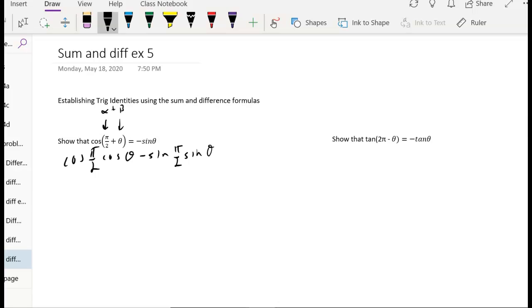So the cosine of pi over 2 is the x value at pi over 2, which is 0. So this is actually 0 times the cosine of theta. And the sine of pi over 2 is actually 1. So this is minus 1 times the sine of theta.